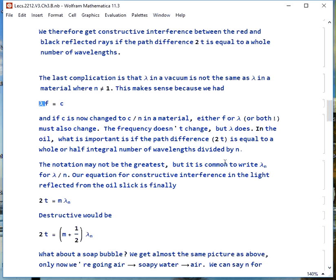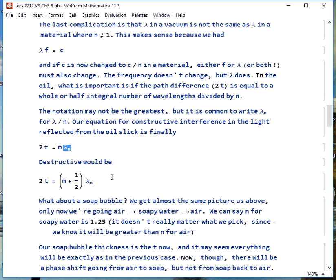So what we would commonly write, this is kind of weird notation but it's in just about every book, we write lambda with a subscript n and what we mean by that is lambda divided by n. So now constructive interference means 2t, the path difference, equals some whole number of the actual wavelength of light in the material. If we want a destructive interference it would be m plus one-half wavelengths.